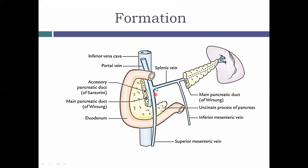Now let's see the formation of the portal vein. It is formed at the level of L2 vertebra, behind the neck of the pancreas, by the union of the splenic vein and the superior mesenteric vein.